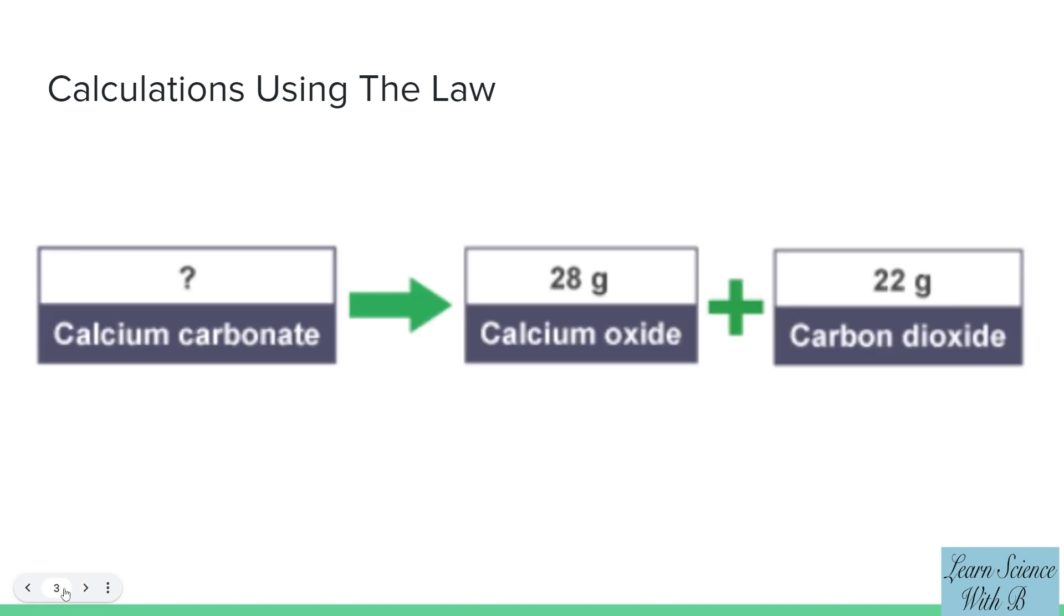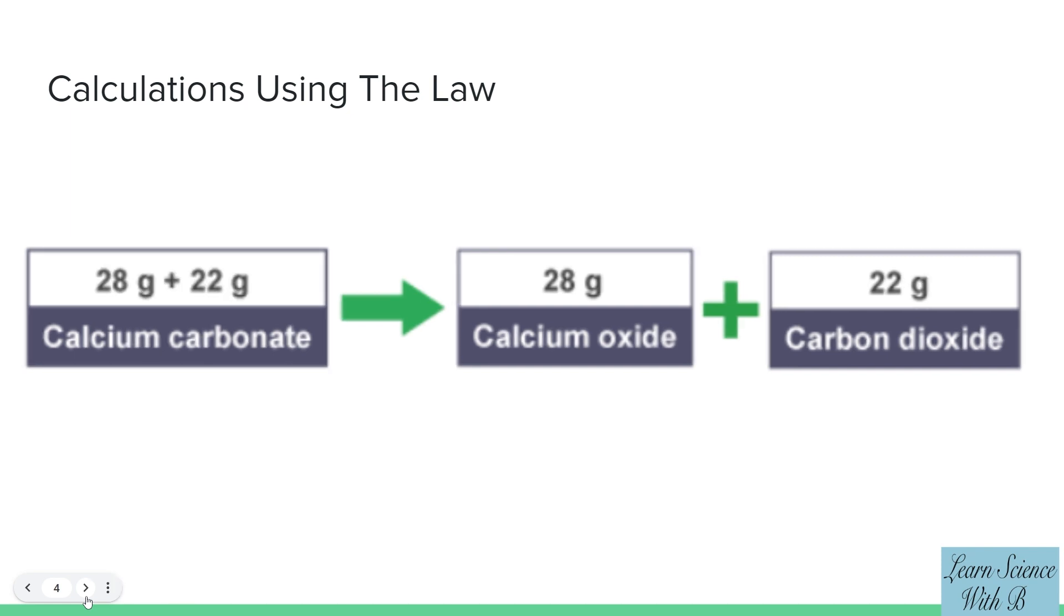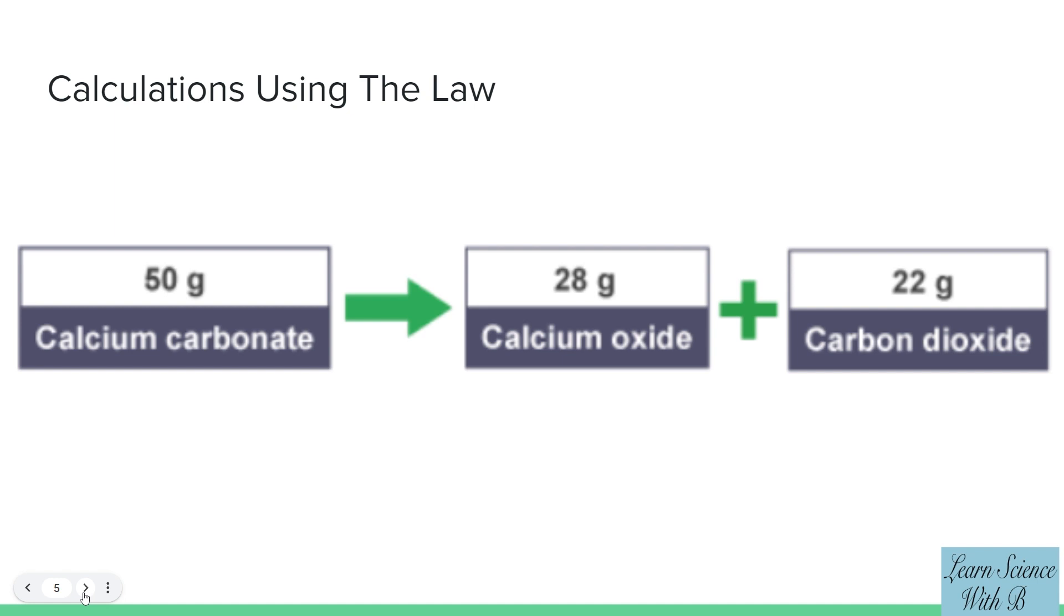Example 1: Calcium carbonate is made up of 28 grams of calcium oxide and 22 grams of carbon dioxide. To find out the amount of calcium carbonate, add 28 grams of calcium oxide and 22 grams of carbon dioxide. This makes a total of 50 grams of calcium carbonate.